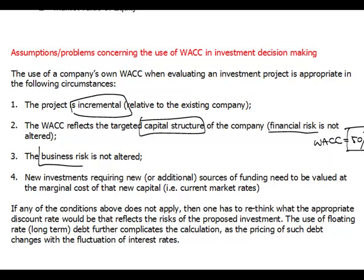The next assumption for using weighted average cost of capital as a discount rate is that business risk is not altered. If business risk changes, beta changes, cost of equity changes, and cost of debt may also change — everything may change. So weighted average cost of capital as a discount rate is only useful when a new project is simply an extension of the existing company's activities. If the company invests in a completely different activity, weighted average cost of capital should not be used because business risk is changed.